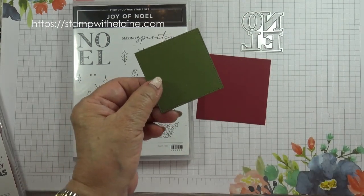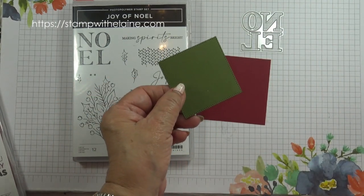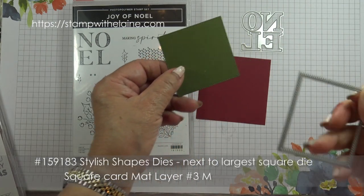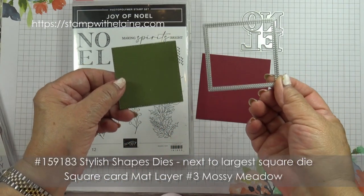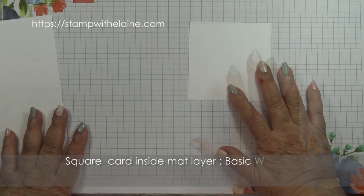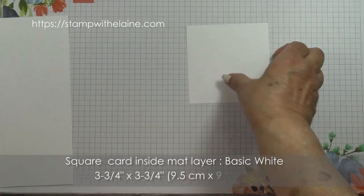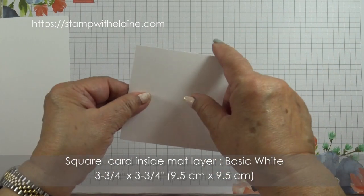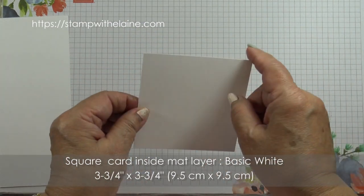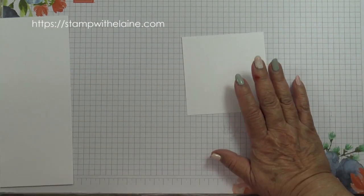You also need a mossy meadow mat layer, and I've cut that from the Stylish Shapes die. This is the next to largest die. You also need a basic white layer for inside the card, and that measures three and three quarters by three and three quarters, which is 9.5 by 9.5 centimeters.